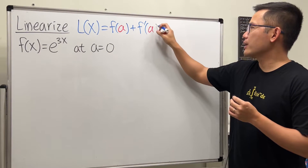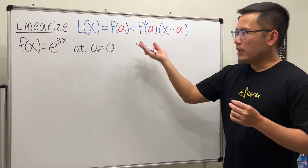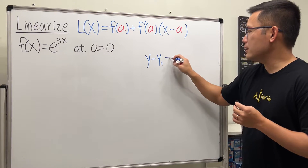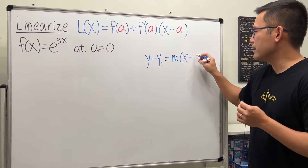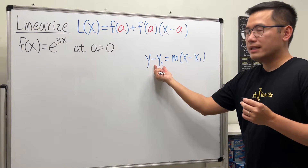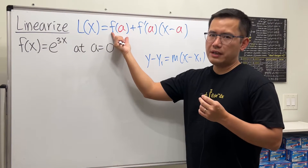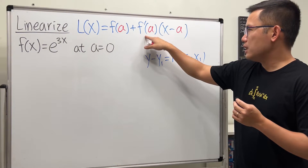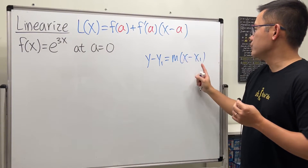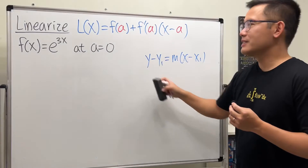We multiply by x minus a. If you look at this, it's really the same as y minus y1 equals m times x minus x1, except we move the y1 to the right-hand side, which is f of a. The derivative is the slope of the tangent line, and x minus a is the x1 — so it's algebra meets calculus.